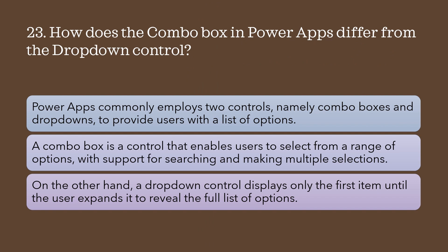How does the combo box in Power Apps differ from the drop-down control? Power Apps commonly employs two controls — combo box and drop-down — to provide users with a list of options. A combo box enables users to select from a range of options with support for searching and multiple selections, while a drop-down control displays only the first item until the user expands it to reveal the full list.